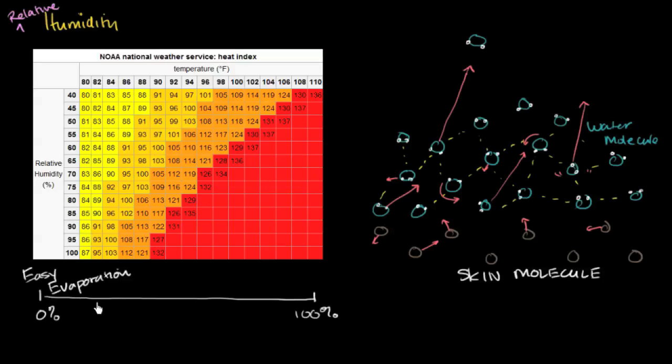But as you have more and more water vapor here, we go up this humidity scale. So let's say we start having a little bit more water vapor in the air. As you have more and more water vapor in the air, you still have molecules that can leave.